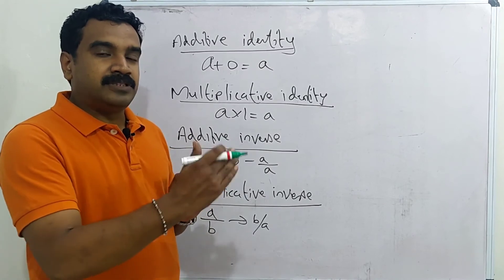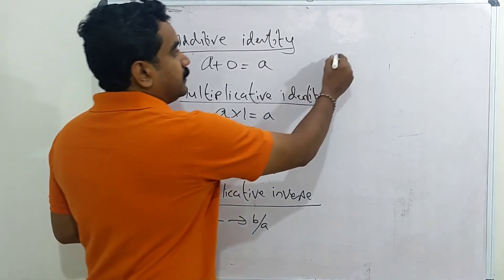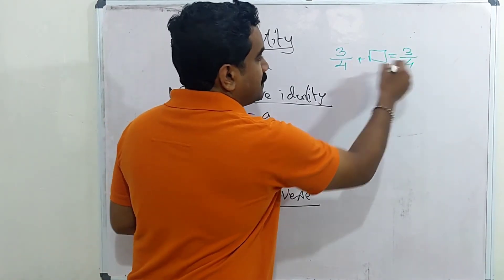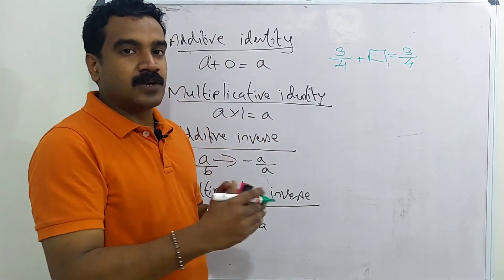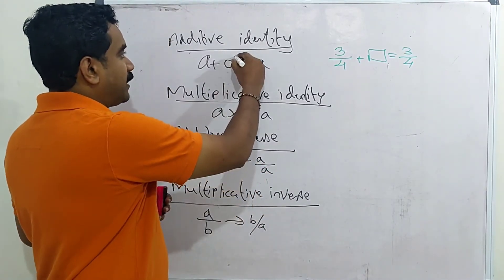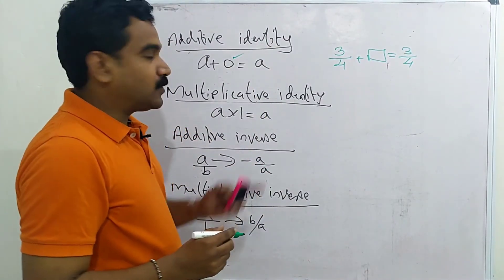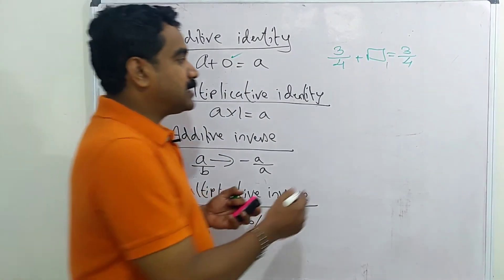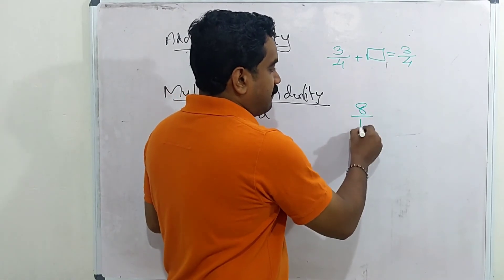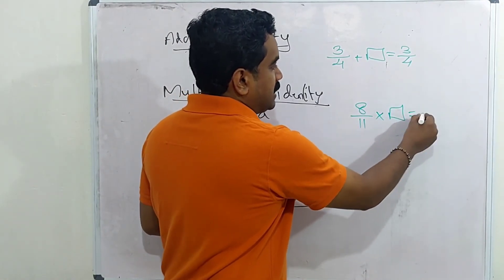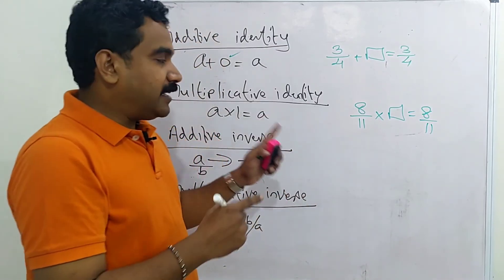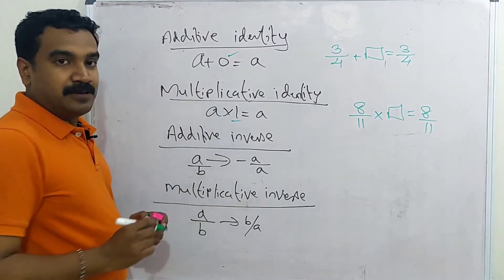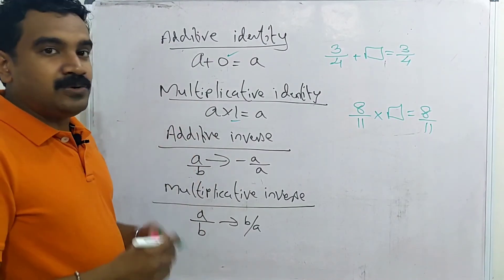Now the identity property. The additive identity: a rational number plus something gives the same rational number. For example, 3 by 4 plus something equals 3 by 4 — what is in the box? Zero. We know that zero plus any number is that number, so A plus 0 equals A. Zero is the additive identity. The multiplicative identity: 8 by 11 into something equals 8 by 11 — the number into 1 is the same number, so A into 1 equals A. One is the multiplicative identity.